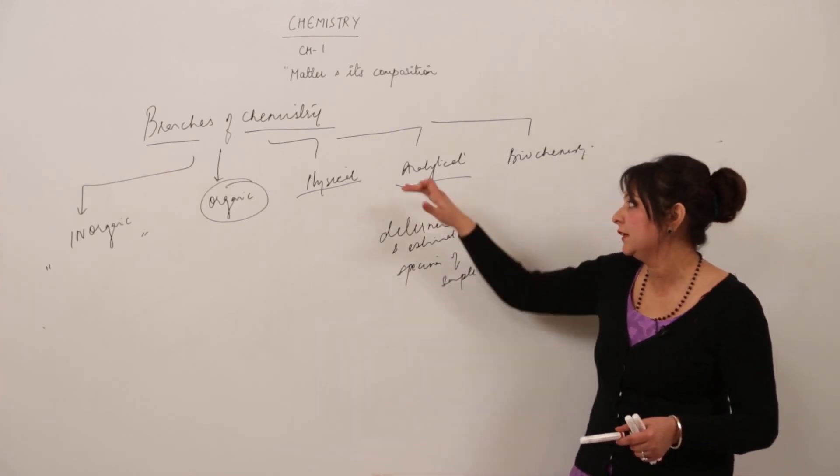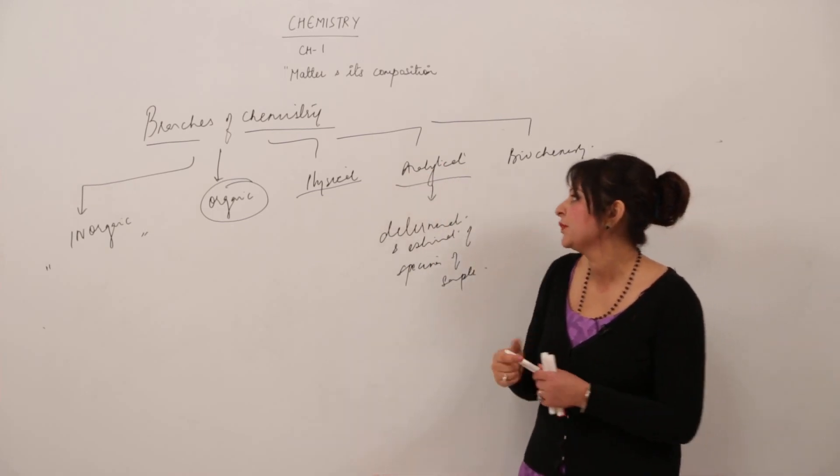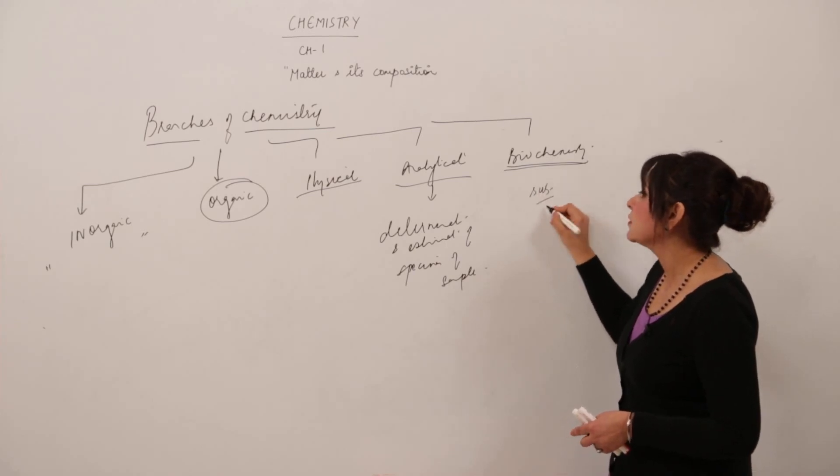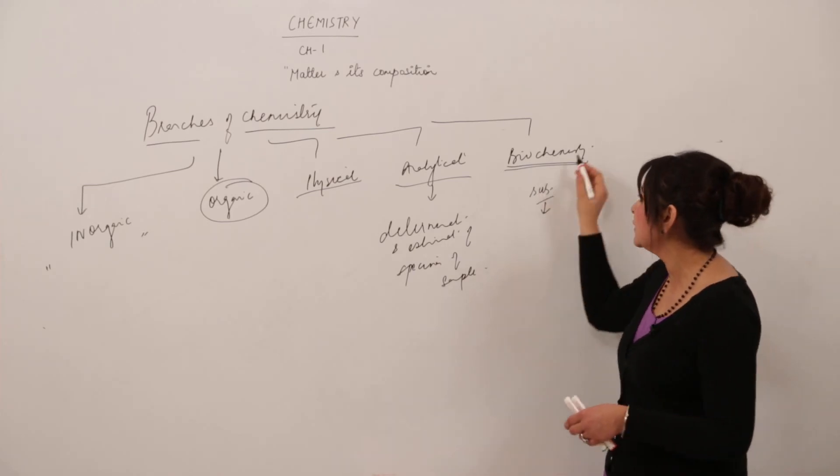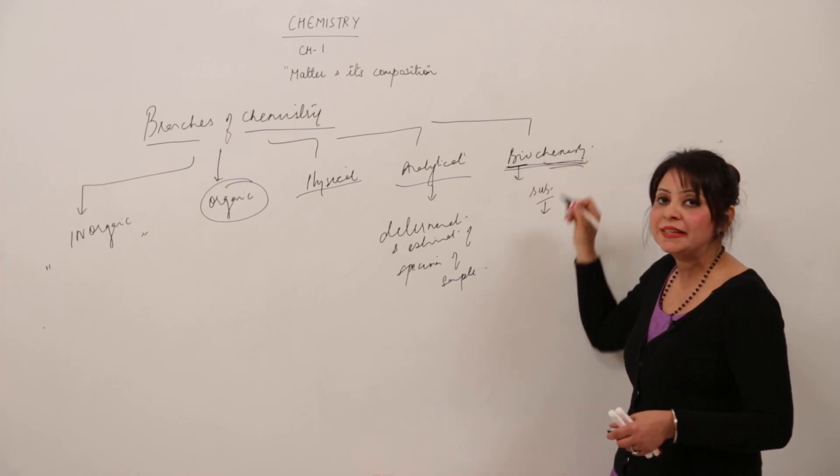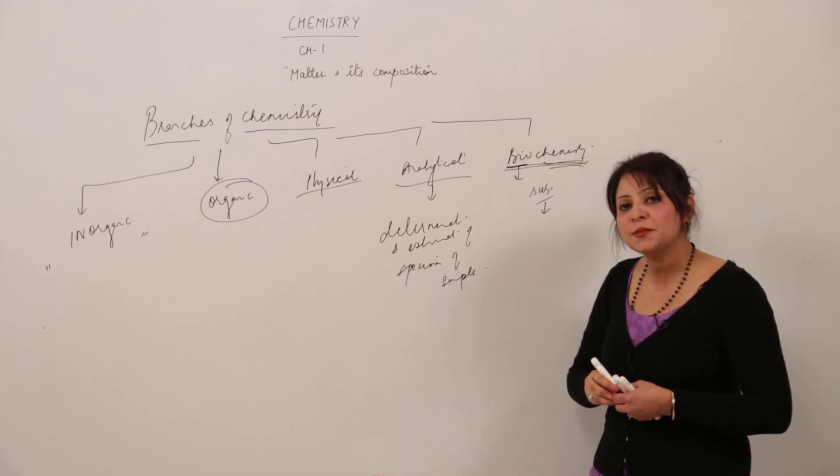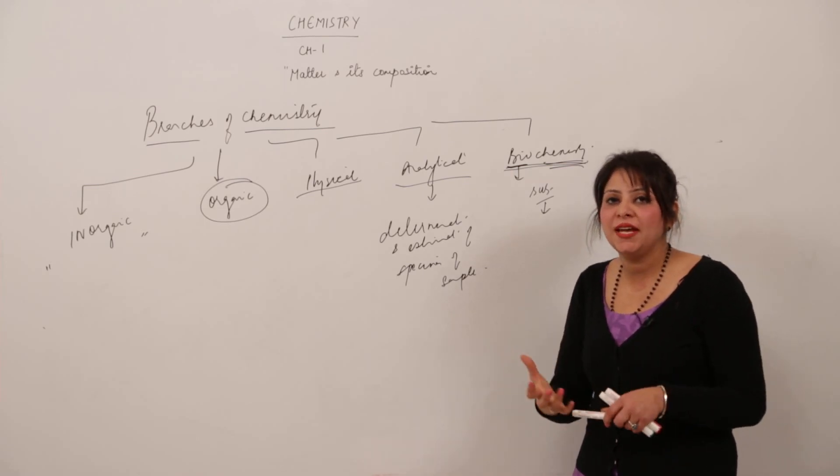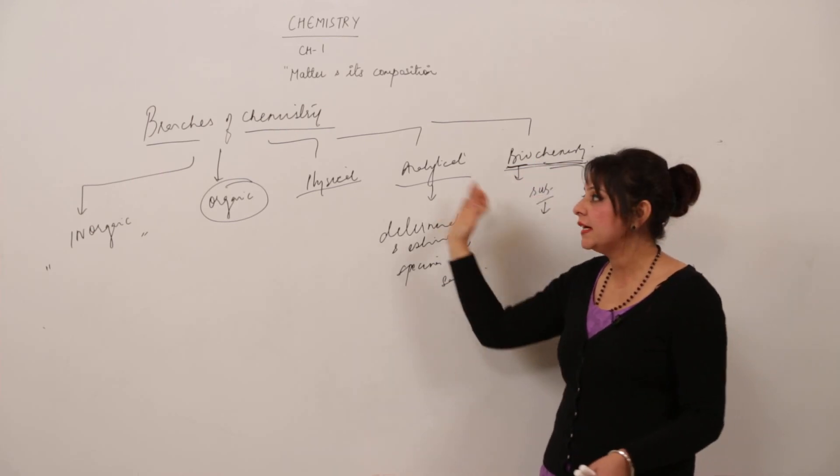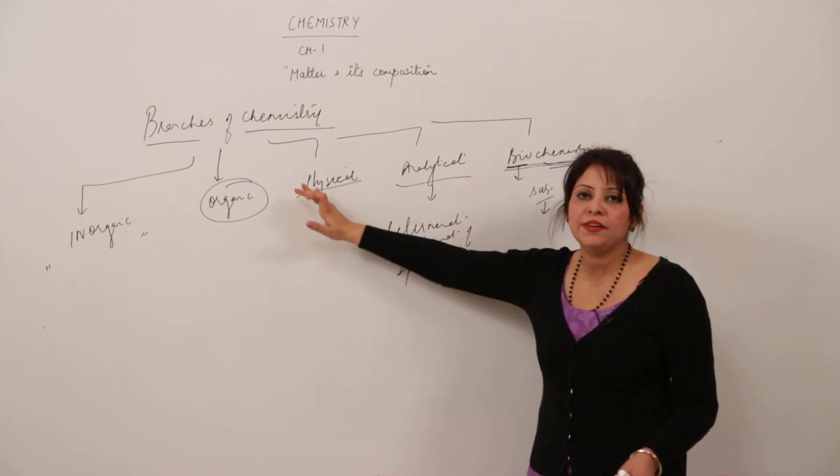Biochemistry deals with the study of substances and their conversion in living matter. Bio means living and chemistry means chemical process. So all the substances which undergo any change in the living substance come under biochemistry. These are the five branches of chemistry.